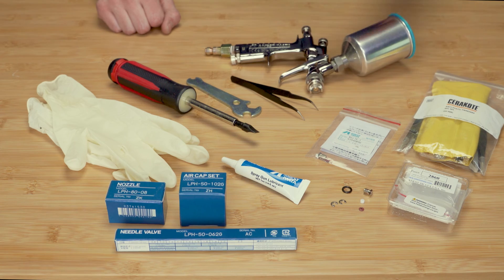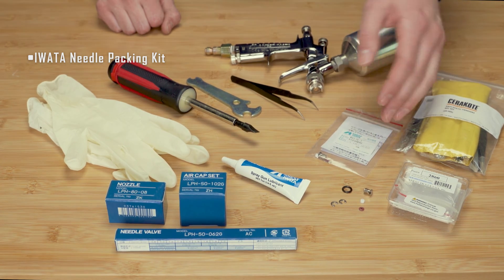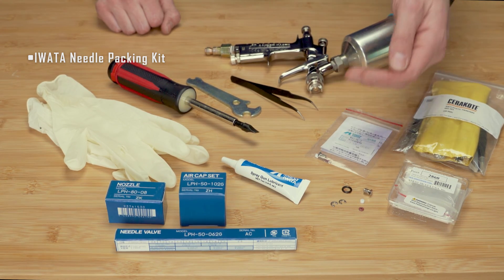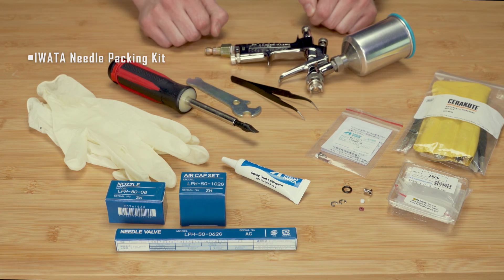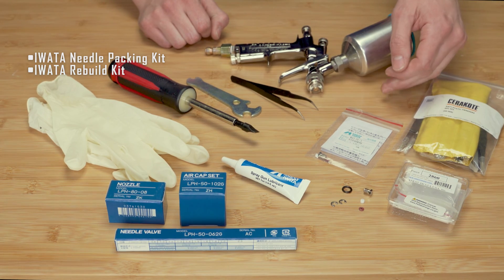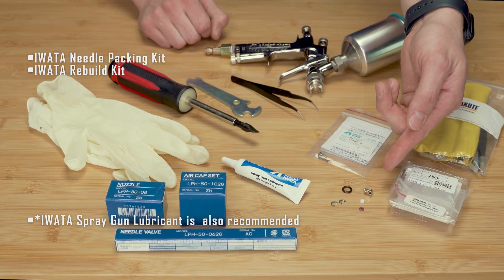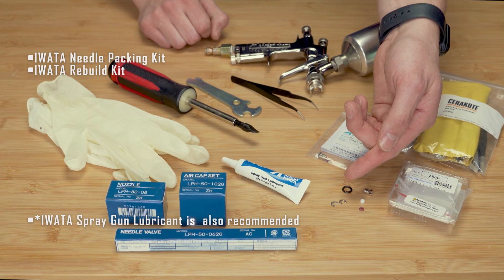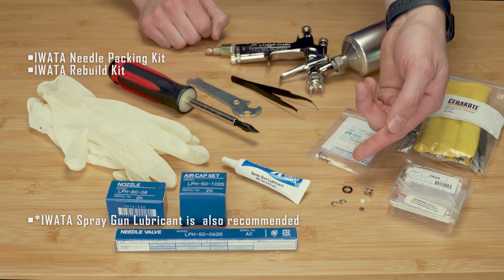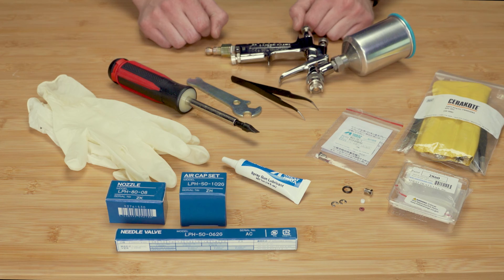Here are the equipment and tools required for service. The supplies required for this project are a needle packing kit, which includes the bushing, the internal seal, and the needle packing nut. Another option is the Iwata rebuilding kit, which includes the previously mentioned parts as well as a spray gun trigger and an air valve O-ring.